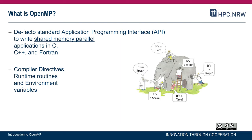OpenMP also provides runtime routines — an API with functionality that can be called from within your parallel program — and environment variables, which are settings you can configure before starting an OpenMP program to influence its behavior.